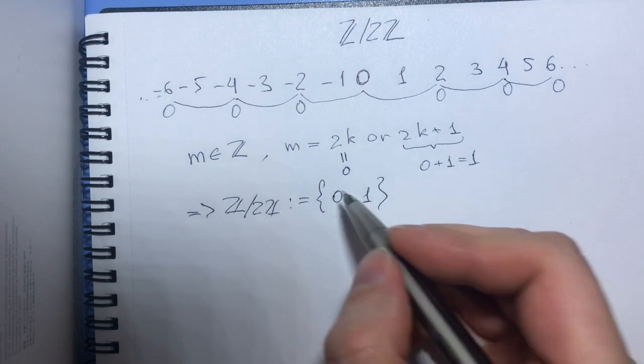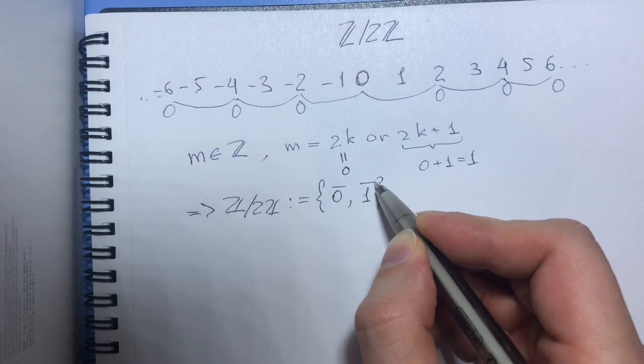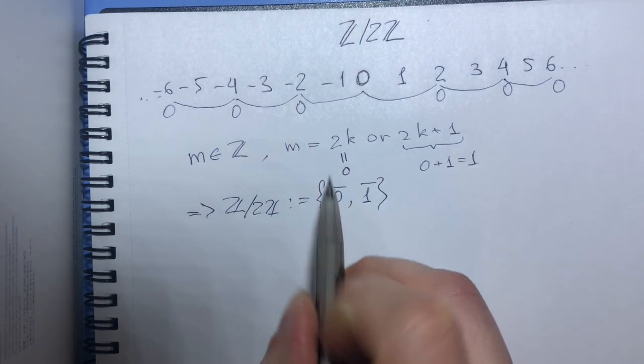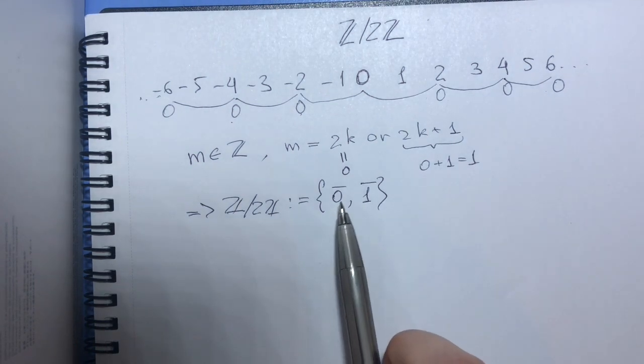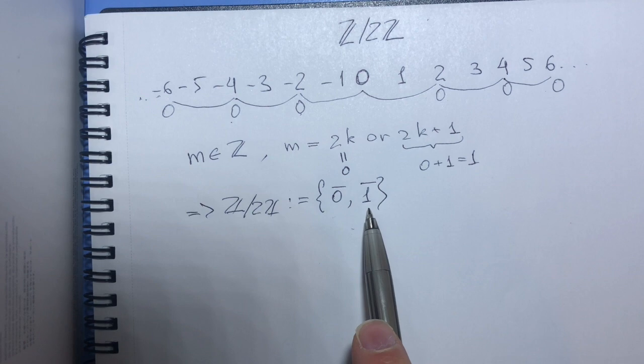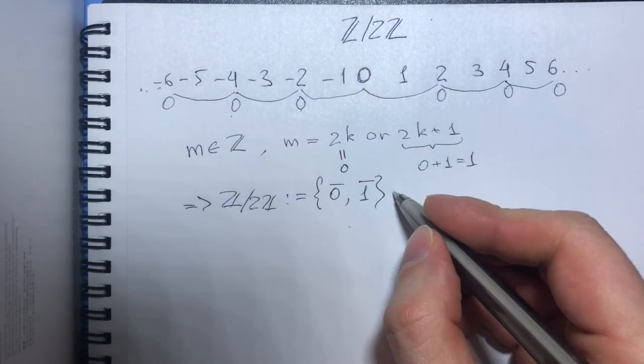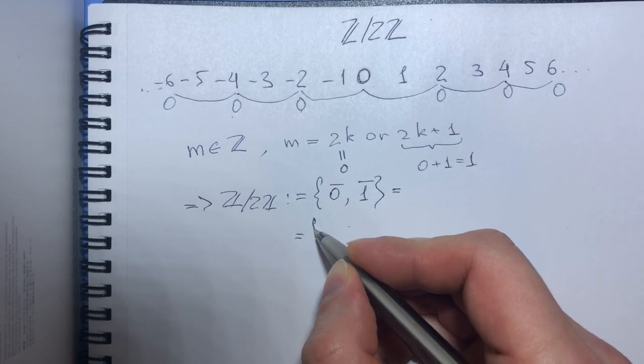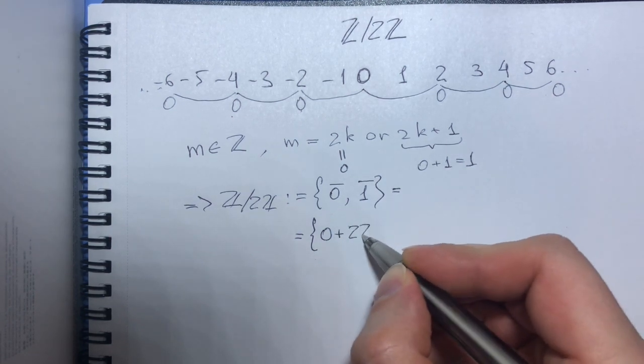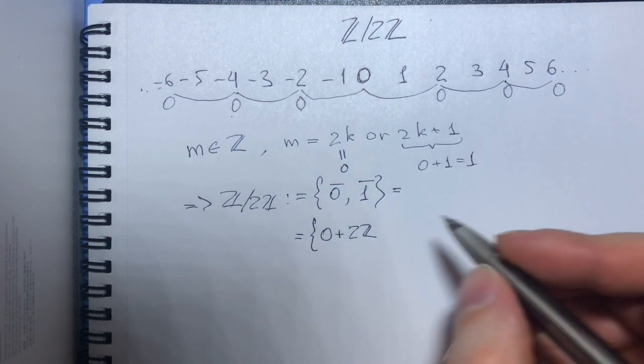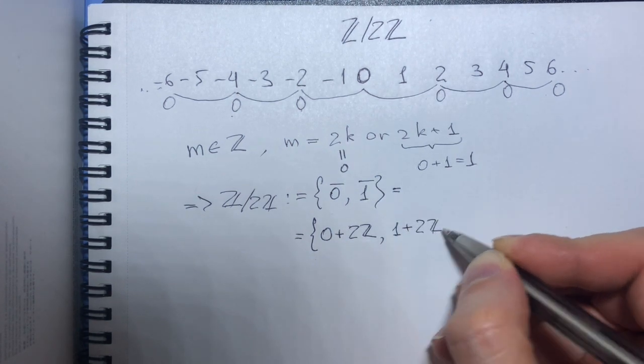And by mathematical notation, it is more common to write 0 bar, 1 bar to symbolize equivalence classes of numbers. So 0 is an equivalence class for even numbers and 1 is an equivalence class for odd numbers. Now in group theory, this is more commonly written in terms of coset notation. So 2Z is our subgroup and this is our first element in the group and this is our second element in the group.